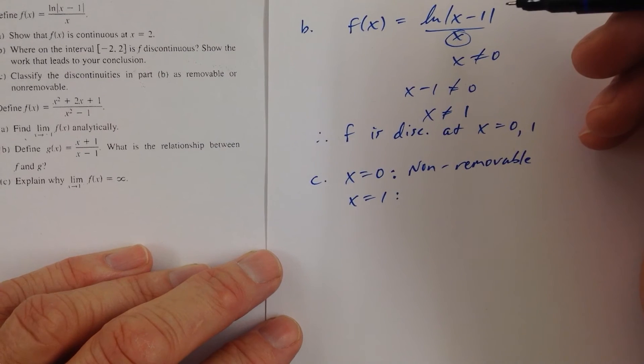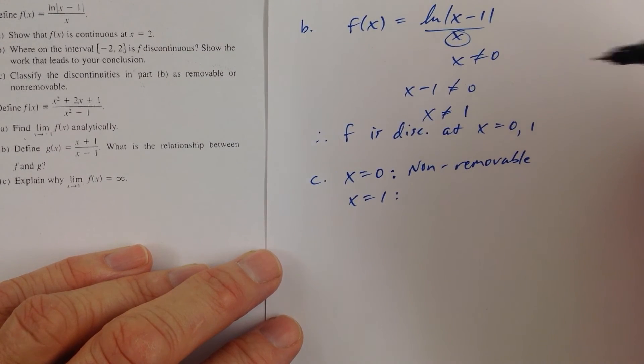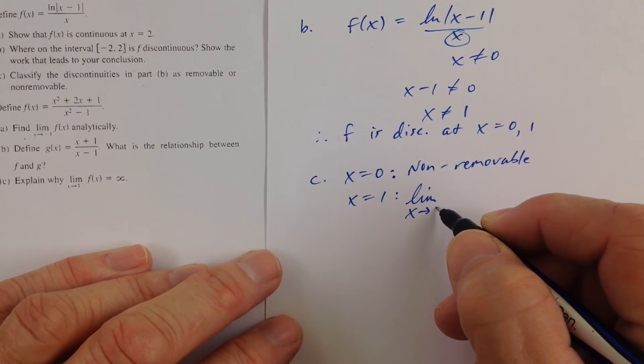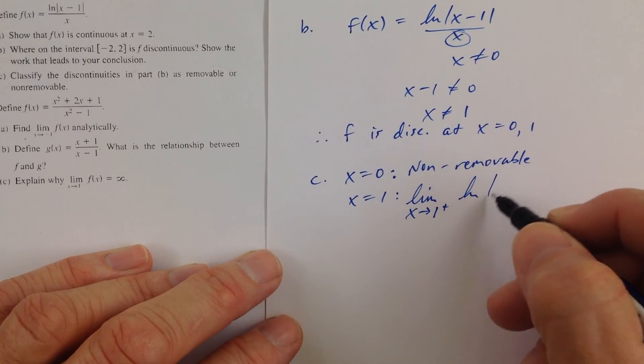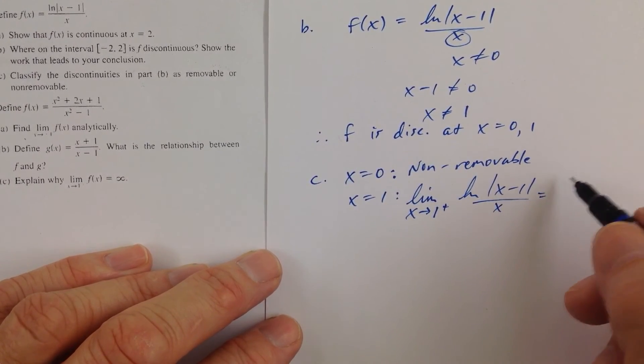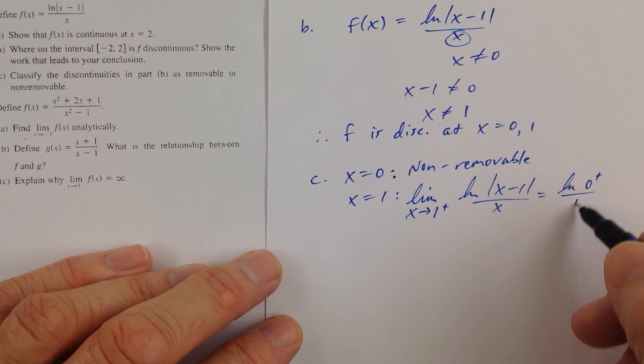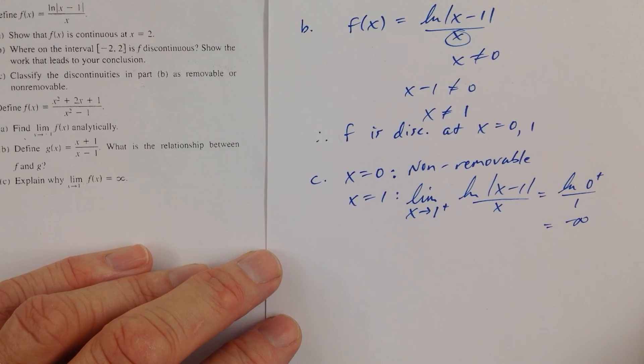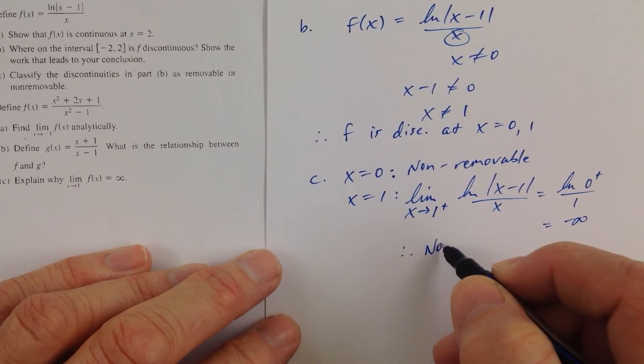And at x equals 1, well, didn't we find the limit? No, let's look at the limit. Limit as x approaches 1 from the right-hand side, ln of the absolute value of x minus 1 all over x. Well, that's equal to ln of 0 from the right over 1. Well, that's negative infinity. Well, automatically, we know if we get a limit of negative infinity, we can't have a removable discontinuity, so we'd say, therefore, non-removable.